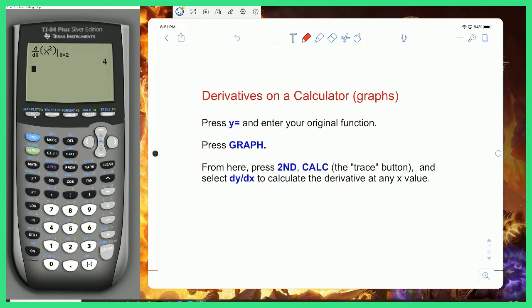You can also calculate derivatives or slope from the y equals menu from a graph. So to do this, you just type your function in y1, we'll just do x squared. You go to the graph key. Here's our nice curve, y equals x squared. And then you're going to press the second key, and you're going to press Calc, which is the trace button. So just press Trace.